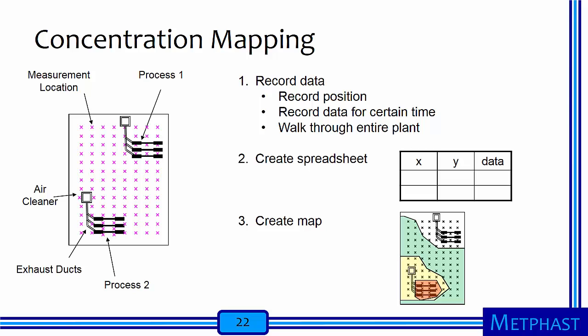In concentration mapping, measurements are made with direct reading instruments throughout a facility. This hypothetical facility has two processes with local exhaust ventilation leading to an air cleaner, which then discharges cleaned air back into the facility. The concentration is measured at each location, noting the X and Y coordinates and the concentration in a spreadsheet. These data are then used to generate a hazard map, where red indicates high concentration and white indicates low concentrations.